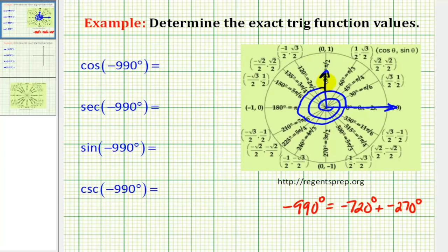So this terminal side will intersect the unit circle at the point zero, one. So we know that x is zero and y is one. That will help us find these function values.